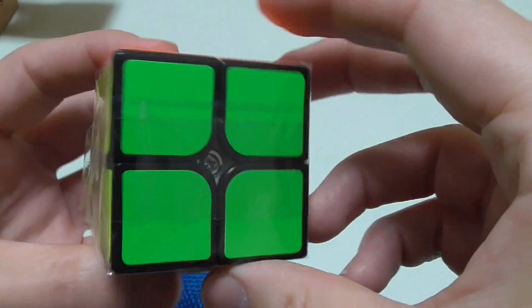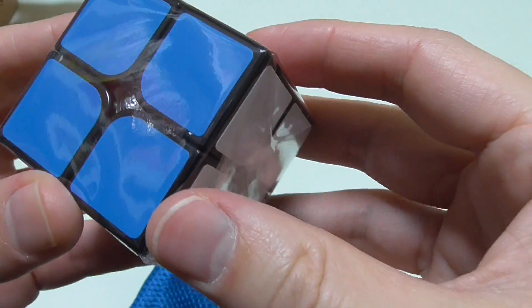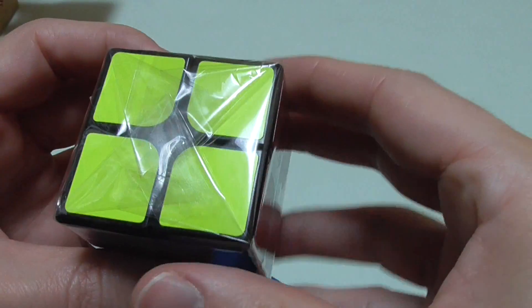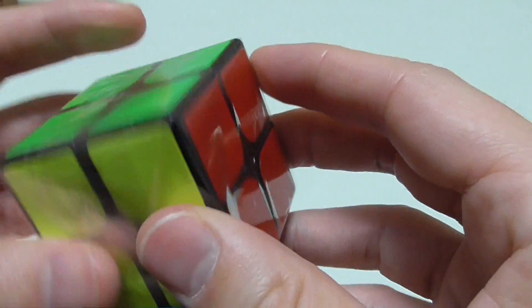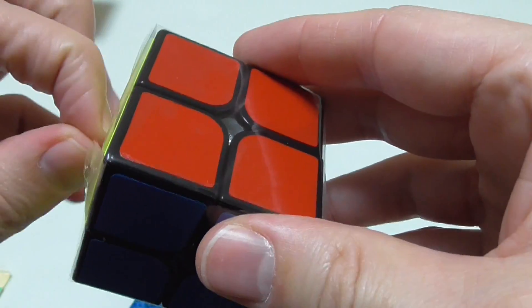A 2x2 cube. I must admit, this is the first time I've ever seen this. Blue, red, white, orange, bright yellow, and green. So the traditional colors of the Rubik's Cube.